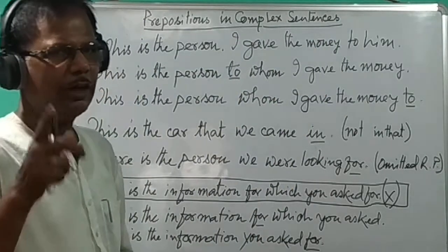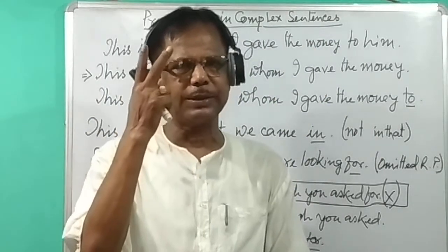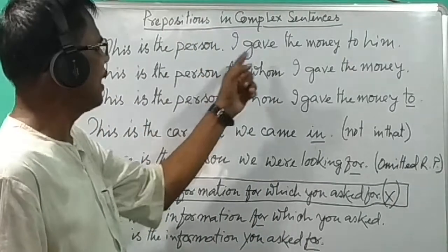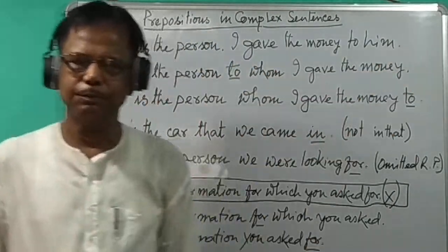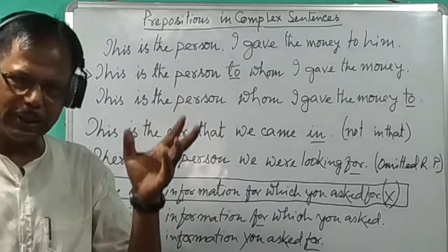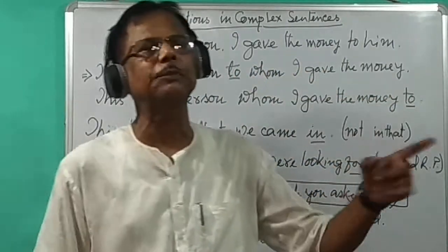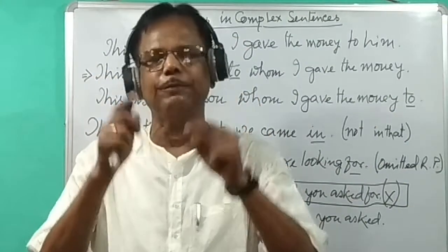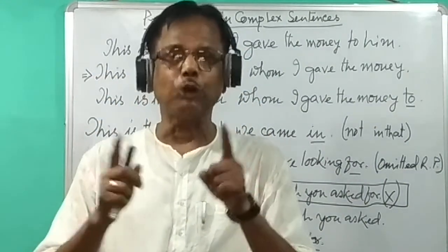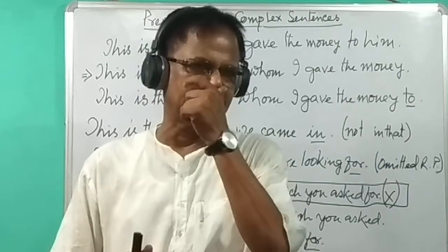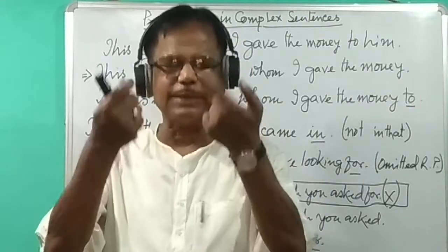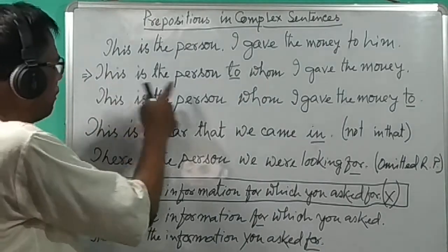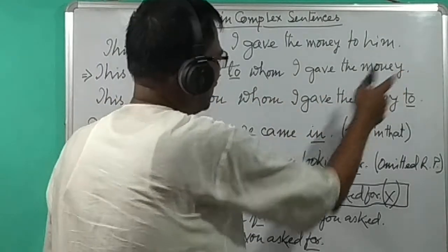First, let us see two simple sentences: 'This is the person' and 'I gave the money to him.' These two simple sentences we can join. If we join them into a complex sentence, then what happens? Let us see: 'This is the person to whom I gave the money.'